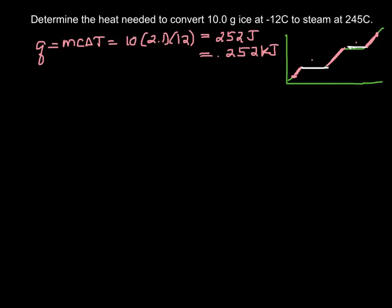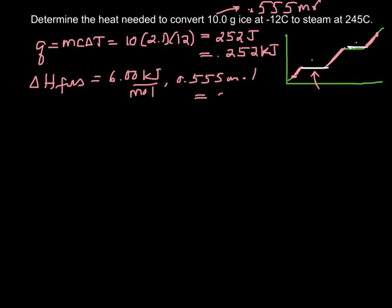For the second step, we need to use the heat of fusion because we're turning ice into water. We have 6 kilojoules per mole, so all I need to do is multiply by the number of moles. If you change 10 grams of water, H2O, to moles, you get 0.555 moles, just dividing by 18.02. We multiply this by 0.555 moles and get 3.33 kilojoules to do that step.